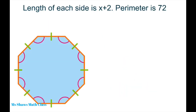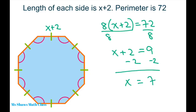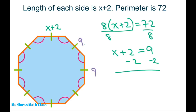Similarly, we have X plus 2. This is an octagon, so it has 8 sides. Divide both sides by 8 using the division property, so we get X plus 2 equals 9. Subtract 2 from both sides and you get X equals 7. All the sides are 9 — not 7, sorry — each side is 9 because 7 plus 2 is 9.